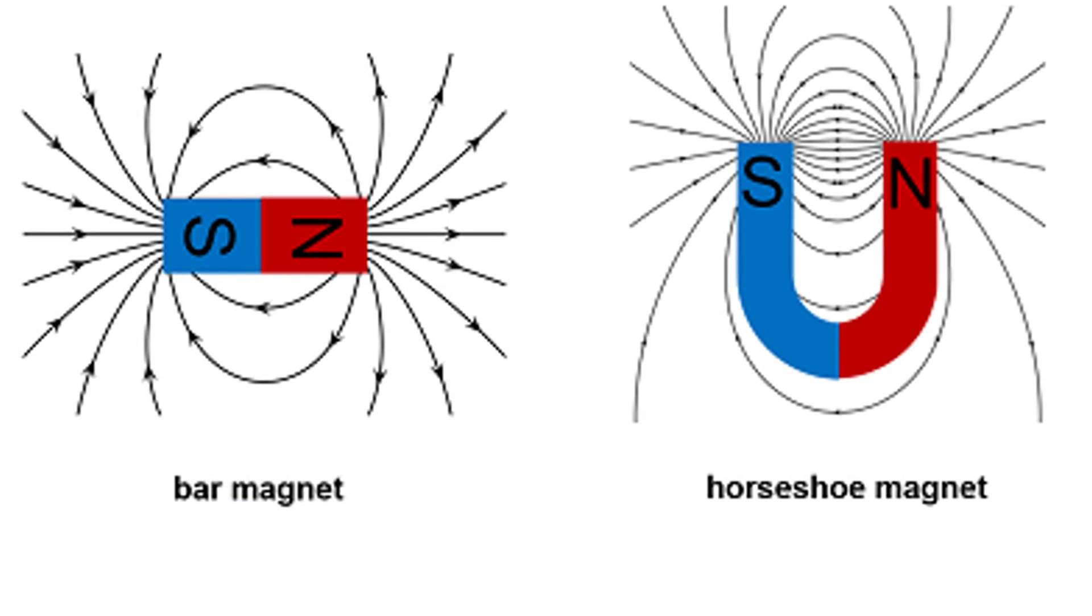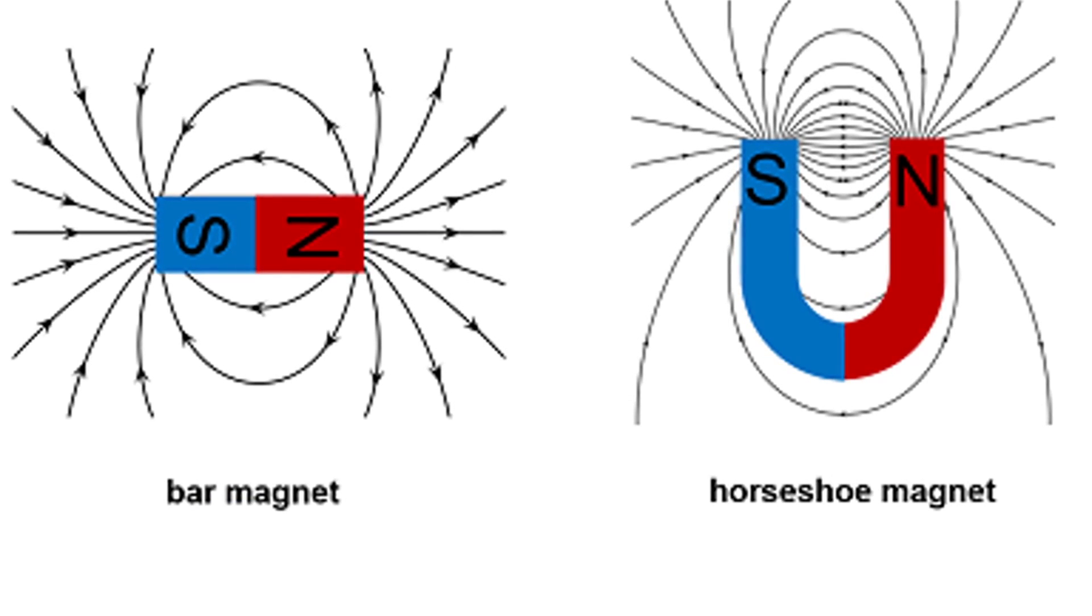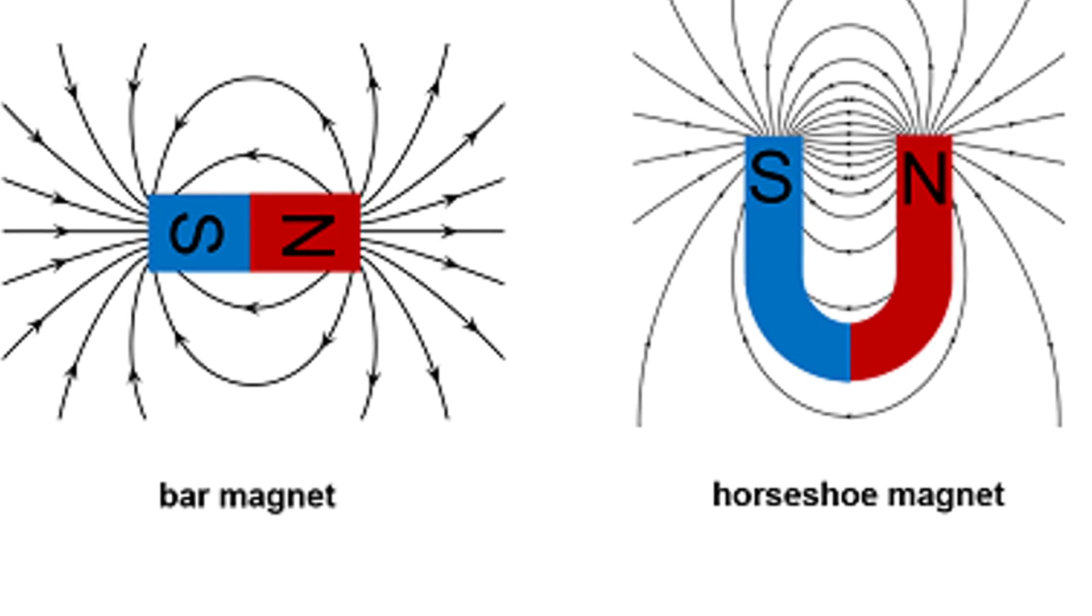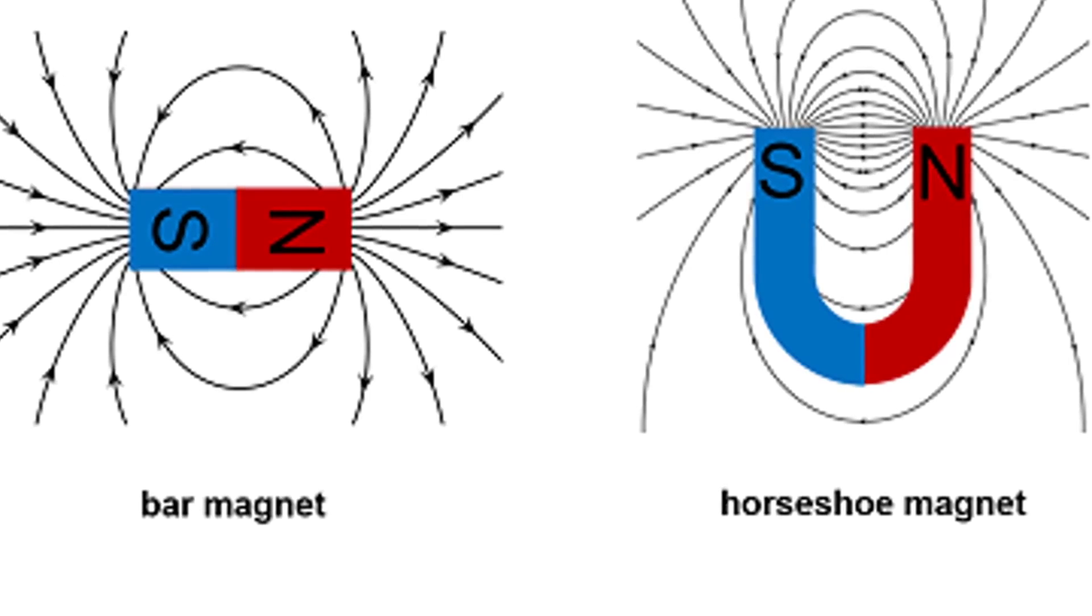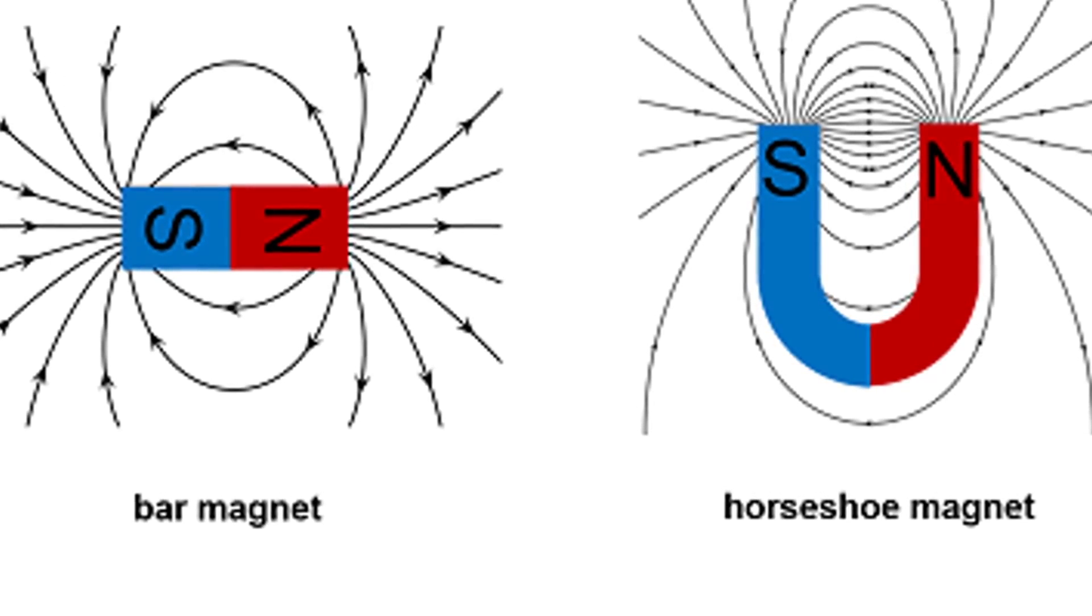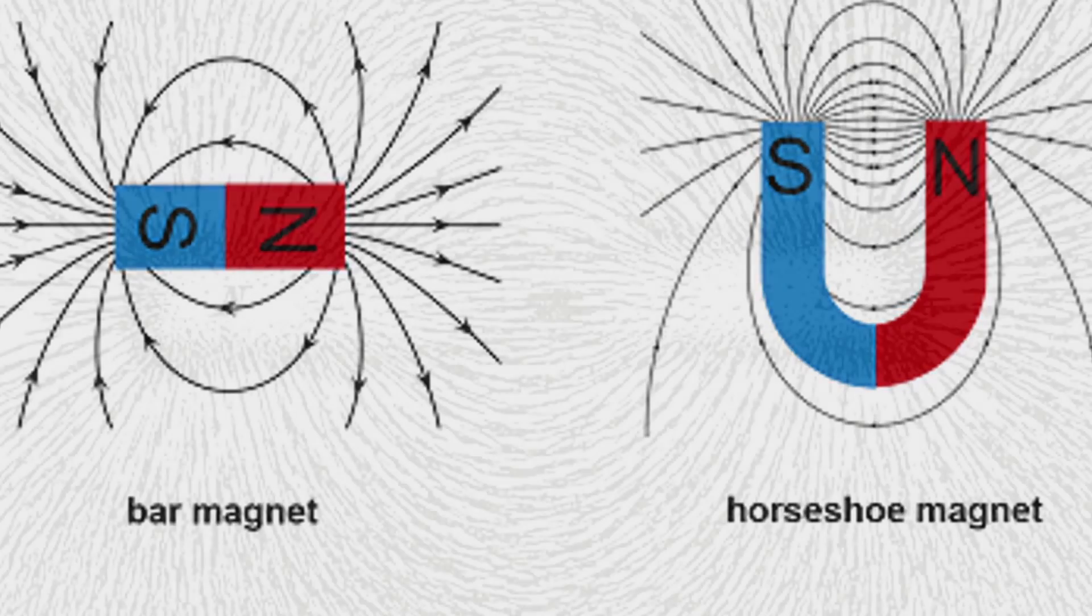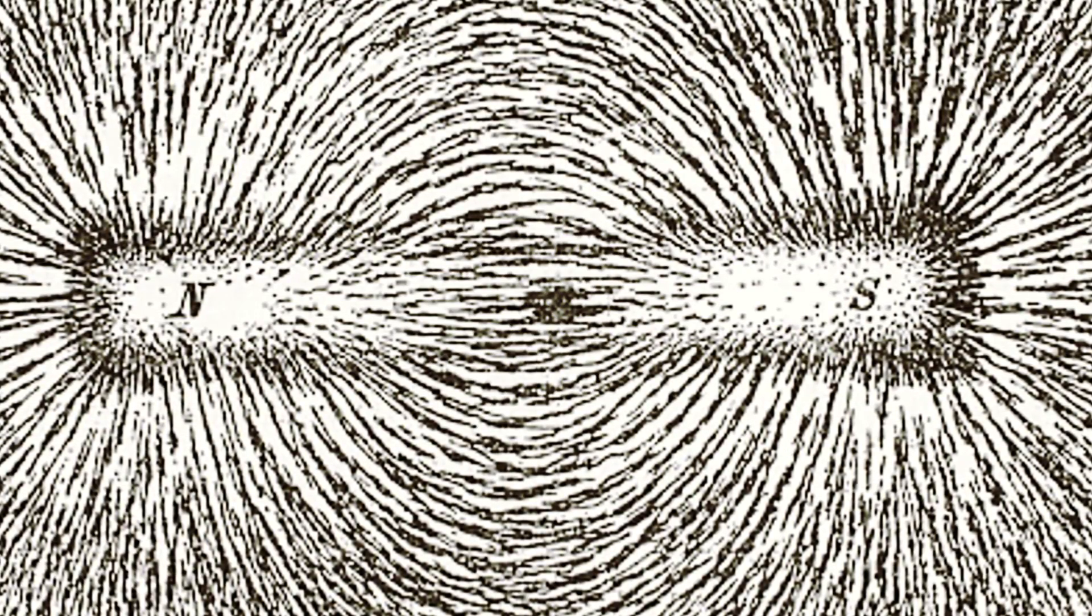A magnetic field is a force field which surrounds a magnet or a moving charged particle. It is represented by magnetic field lines, which are drawn in the direction of the force which would be experienced by a north magnetic pole placed in the field. Magnetic field lines form closed loops, and they always go from the north pole to the south pole of a magnet. The strength of a magnetic field is measured in Tesla.